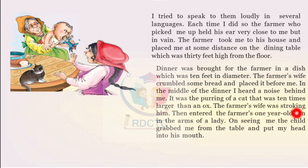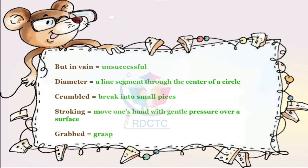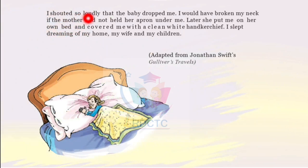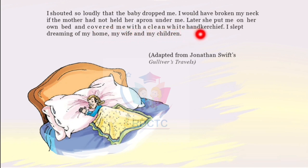The farmer's wife was stroking the cat. Then entered the farmer's one-year-old son in the arms of a lady. On seeing me, the child grabbed me from the table and put my head into his mouth. I shouted so loudly that the baby dropped me. I would have broken my neck if the mother had not held her apron under me. Later, she put me on her own bed and covered me with a clean white handkerchief. I slept dreaming of my home, my wife and my children.